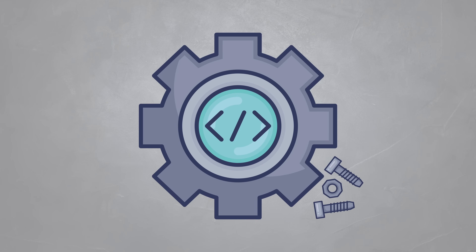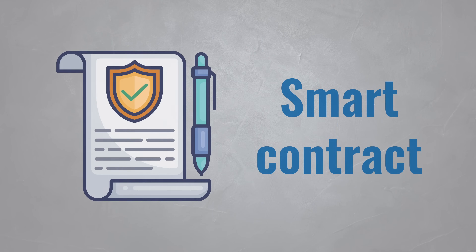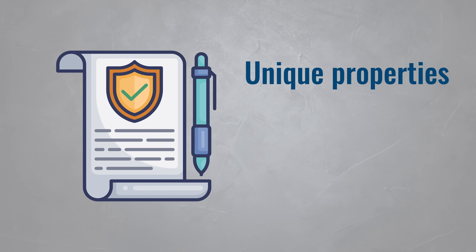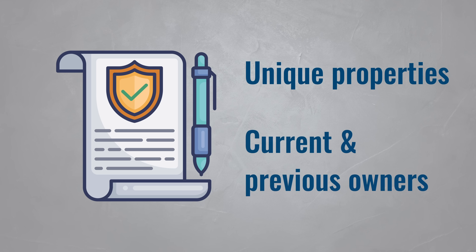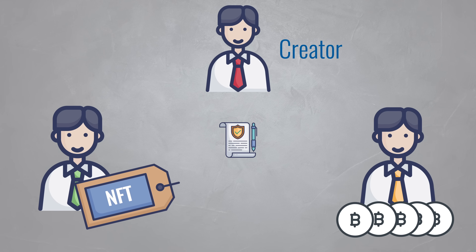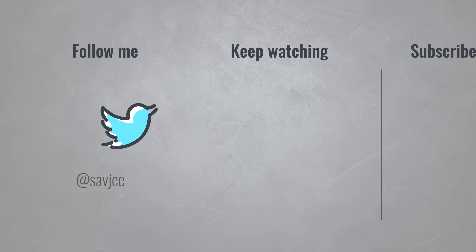Technically, NFTs are essentially smart contracts that live on a blockchain. The contract stores the unique properties of the item and keeps track of current and previous owners. An NFT can even be programmed to give royalties to the creator every time it exchanges hands.